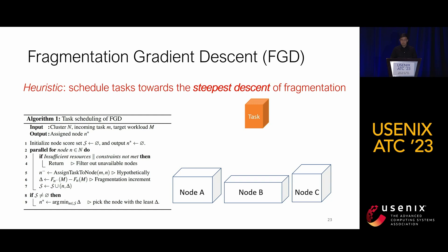We will now explain Fragmentation Gradient Descent more formally. We see good scheduling as suppressing the growth of fragmentation rate as much as possible, achieved by scheduling tasks towards the steepest descent of fragmentation. It is a very simple heuristic, called FGD. The algorithm has three steps: after filtering out unavailable nodes, it hypothetically assigns a task to each node, then calculates the increment of fragmentation (which can be negative, meaning a decrease), and finally chooses the node causing the minimum increase in fragmentation.